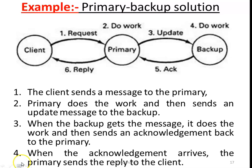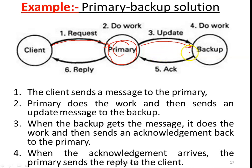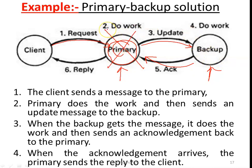How does primary backup work? The client sends a request message to the primary. The primary does the work and sends the updated message to the backup. The backup receives the message, does the work, and sends an acknowledgement back to the primary. When the acknowledgement arrives, the primary sends the reply back to the client. This is how fault tolerance is handled in primary backup, with one primary server and one backup server.